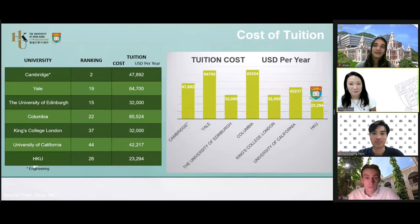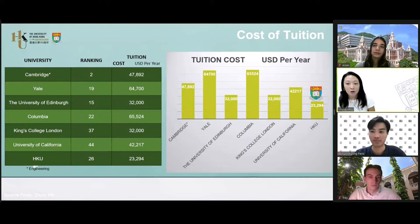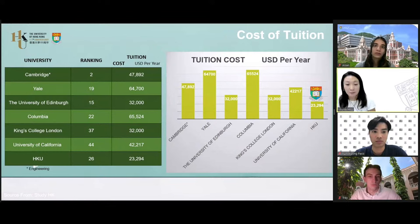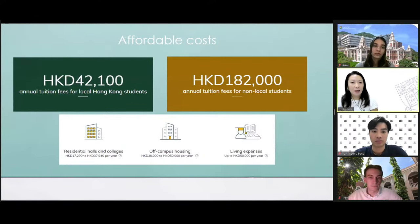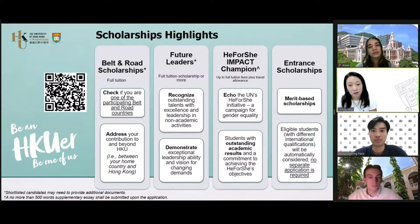Last stop — financial considerations. Let's talk about the important aspect of cost for pursuing undergraduate studies. At Hong Kong U, we strive to provide a high-quality education that is accessible and affordable, with competitive tuition fees offering excellent value. For local students, the tuition fee is approximately 42,000 HKD, and for non-local students it is approximately 182,000 HKD. We also provide different scholarships for our applicants.